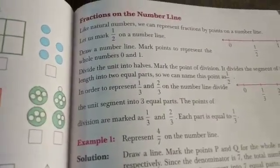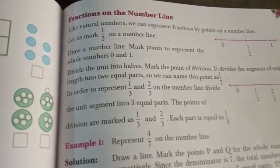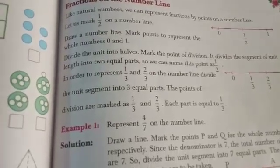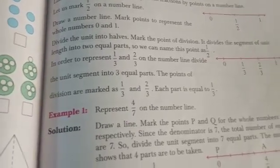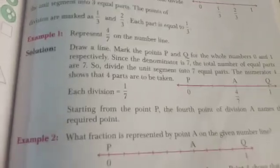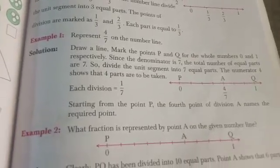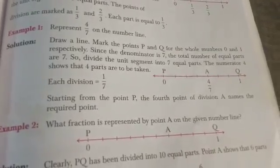Fractions on the number line. Like natural numbers, we can represent fractions by points on a number line. For example one, we represent four upon seven on the number line.